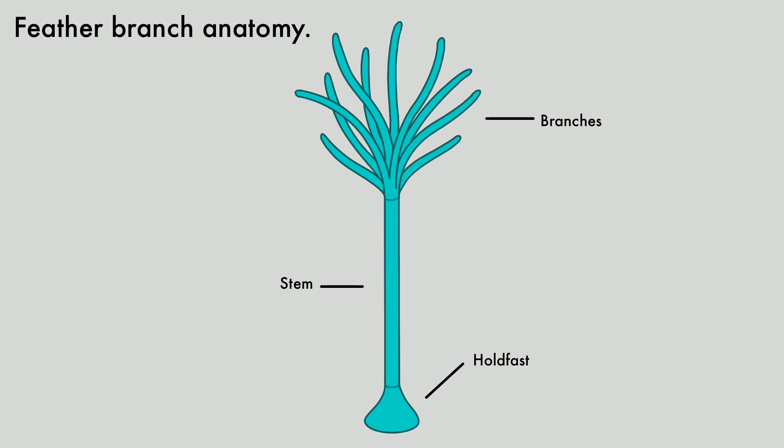The stem connects the holdfast to the branches and gives structure to the organism. The branches are used to feed by catching microorganisms and other organic matter, and along with the stem continuously grow throughout the organism's lifespan.